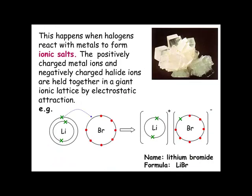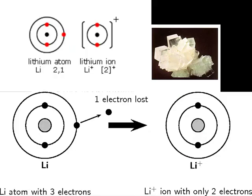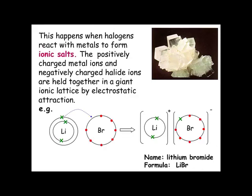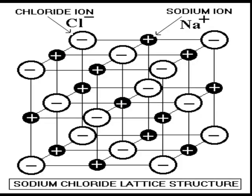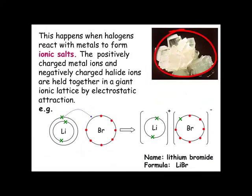When Group 7 elements react with metals, they form ionic salts. The metal will form a positively charged metal ion as it loses an electron — for example, lithium. That electron will move across to a halide — for example, bromine, which has seven in the outer shell. It gains the electron from the lithium, becoming negatively charged. We now have two ions, one with a plus charge and one with a minus charge. These will attract, forming a giant ionic lattice held together by electrostatic attractions, and we will have a salt produced.